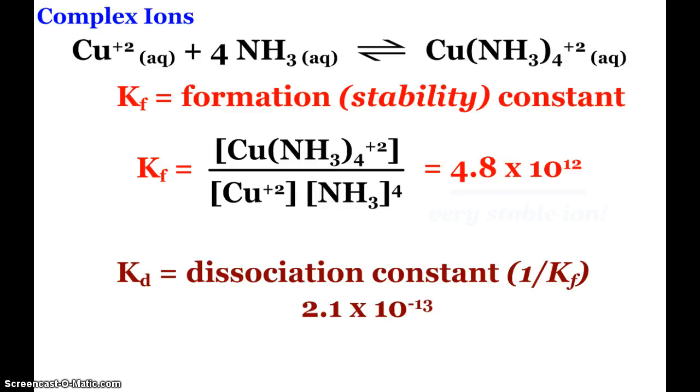So here we see the formation of this copper ammonia ion complex ion and yes there's an equilibrium constant Kf our formation or stability constant and you can see it's written like any of our other equilibrium expressions and here's its value and hopefully you recognize this is a very stable ion. 4.8 times 10 to the 12th that's a big number and you can look at it the other way. The reciprocal is called the dissociation constant and you can see the reciprocal for this complex ion 2.1 times 10 to the negative 13th that barely dissociates and so again these complex ions can be very very stable.